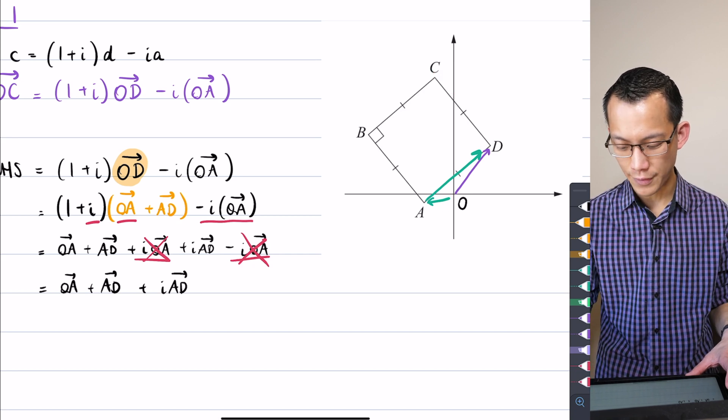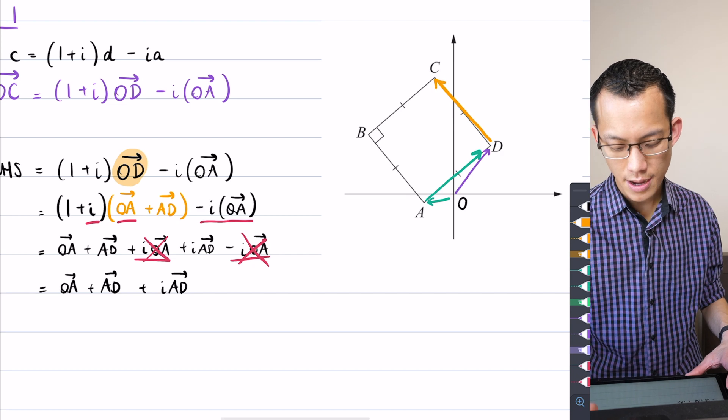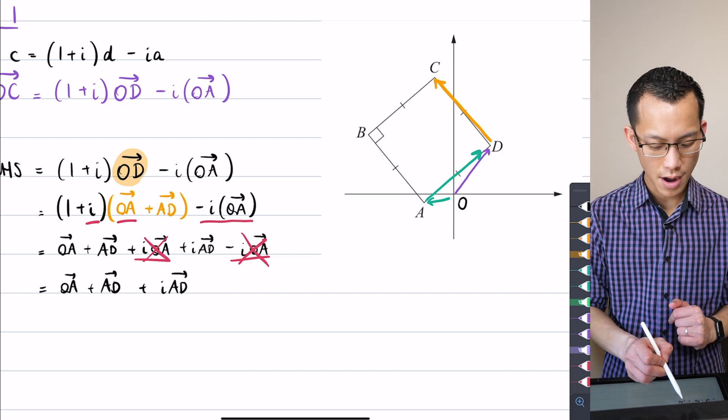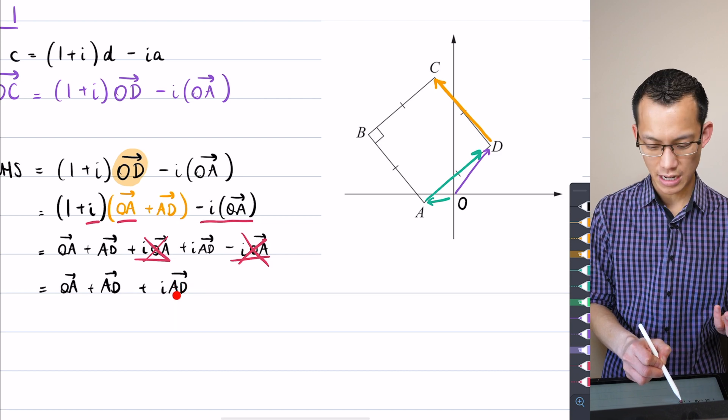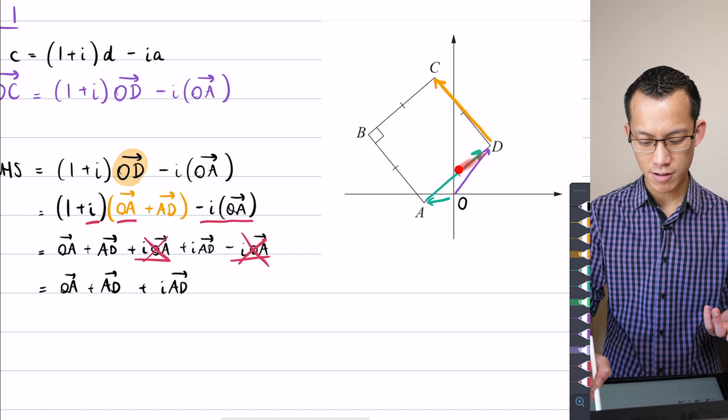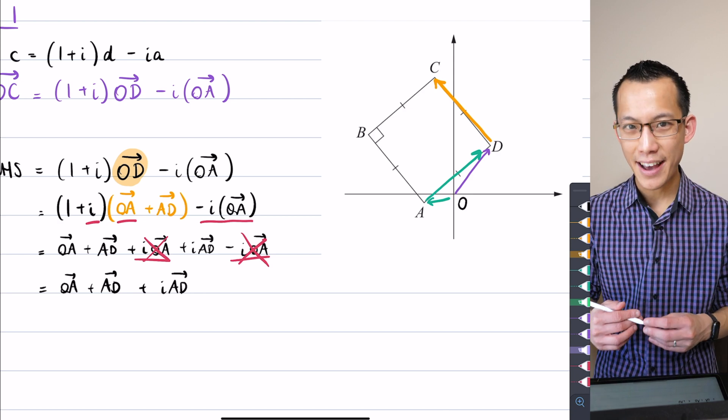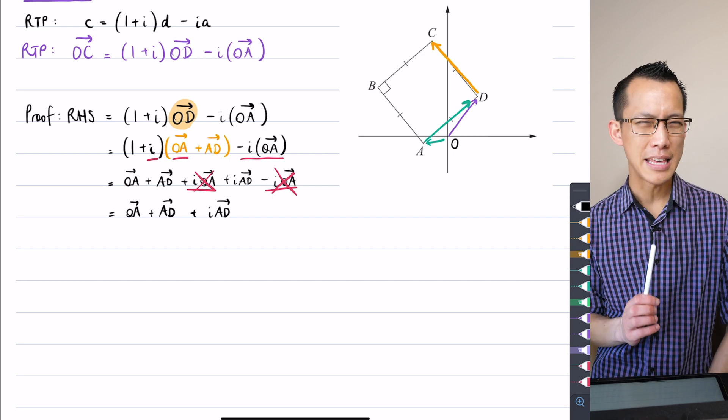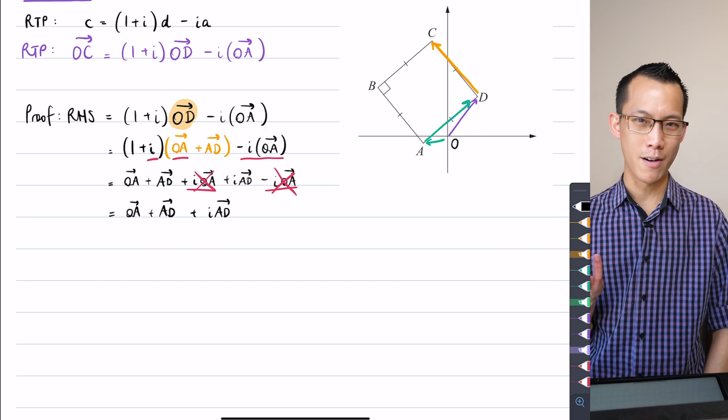This is the remaining vector, as it were, from D up to C, except I don't have DC there. I've got i times AD. So this is where you need to think back to your complex number arithmetic, and this, by the way, overlaps with a bit of the exam review we're going to do later on.